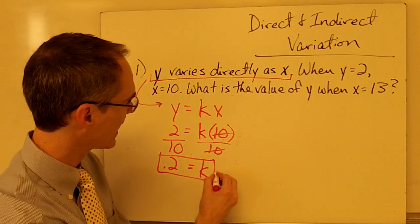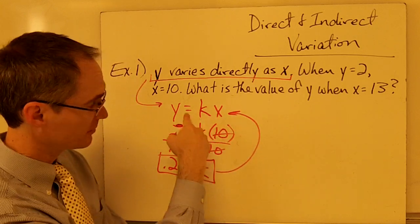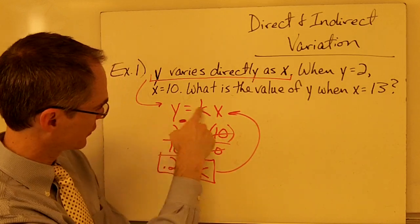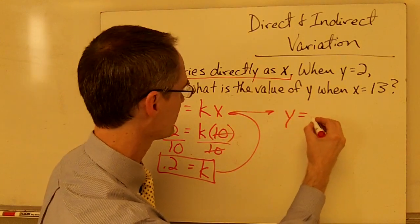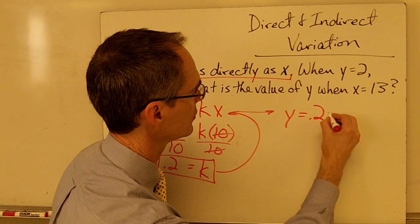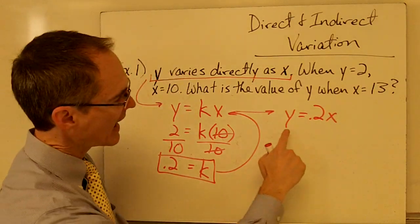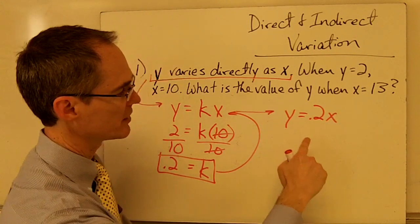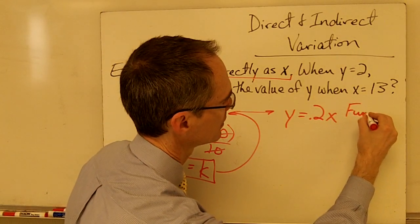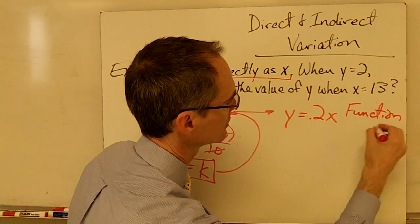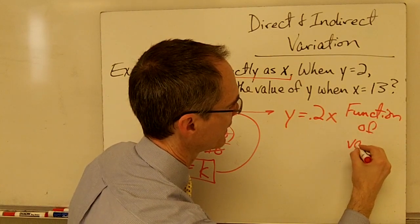Well, I've just determined that the value of k for my direct variation function here is going to be 0.2. So now I take this value of k, and I essentially plug it in to this first formula here that I wrote down. And this becomes y equals 0.2 times x. And this right here, this formula, this equation,